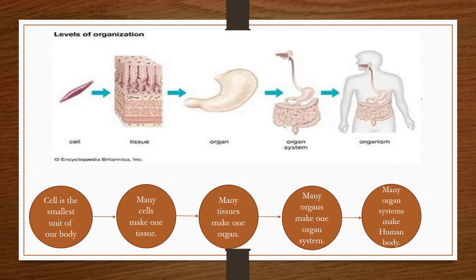So cell is the smallest unit, whereas organ system is the largest unit of the body. The levels of organization are: cell, tissue, organ, organ system, and organism, which is the human body. Many cells come together to form one tissue, many tissues form an organ, many organs form an organ system, and many organ systems make one human body.